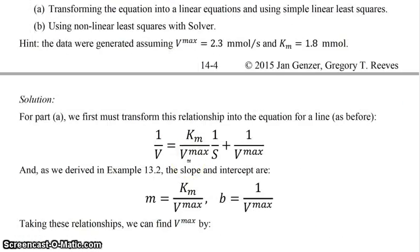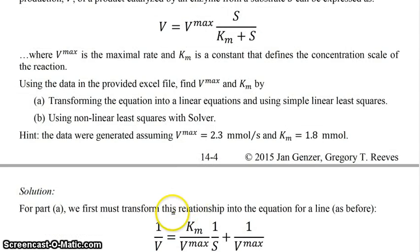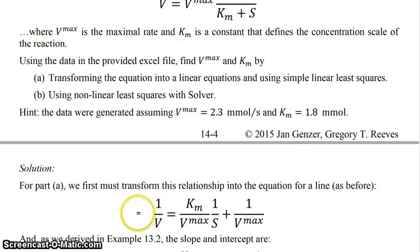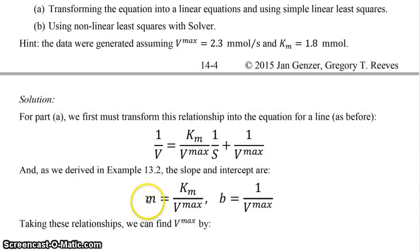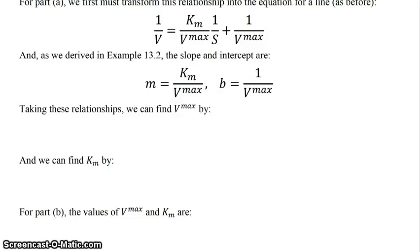To start, first we have to transform the equation into one that is suitable for a line. This is just like we did in the previous lecture. Our slope is this and our intercept would be this. Taking these two relationships we can find Vmax by the following: Vmax equals 1 over the intercept and Km is equal to the slope over the intercept.